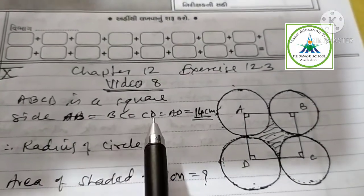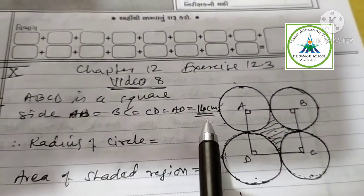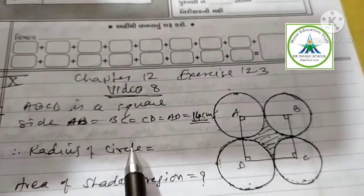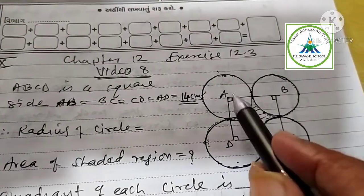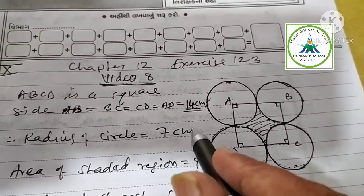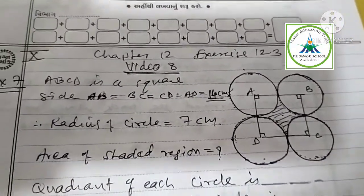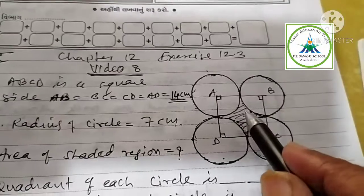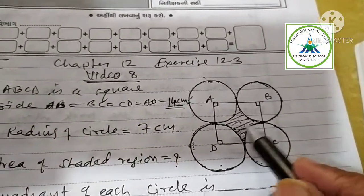As per the given example, ABCD is a square. Side AB equal to BC equal to CD equal to AD equal to 14 cm. Therefore, you can write radius - this much is radius of the circle - that is 7 cm. Area of shaded region is asked, this inner part.